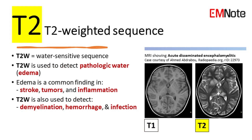T2 Weighted Sequence is the water-sensitive sequence. It is used to detect pathologic water in the brain, such as edema. Edema is a common finding in various neurological conditions such as stroke, tumors, and inflammation. T2 Weighted Sequence is also used to detect other pathologies such as demyelination, hemorrhage, and infection.